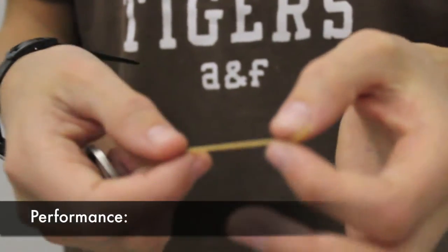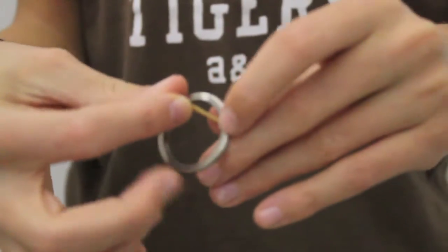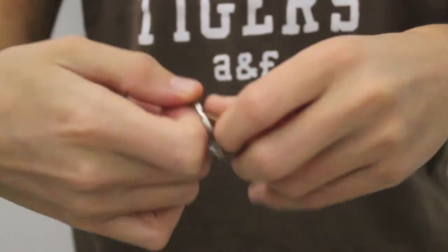So first, look, my rubber band is normal and my ring too. They're both normal. What I'm going to do is I'm going to take the rubber band, put it through the ring.